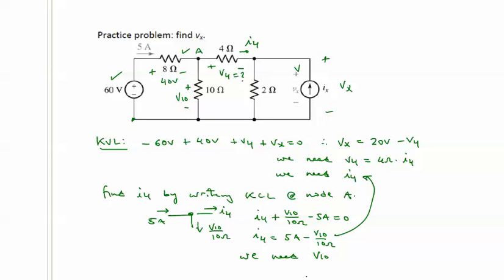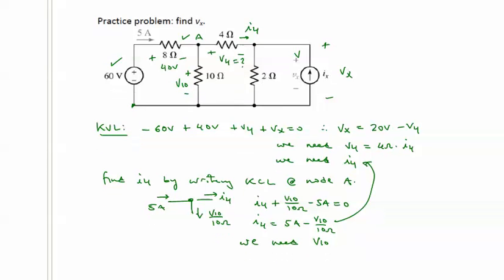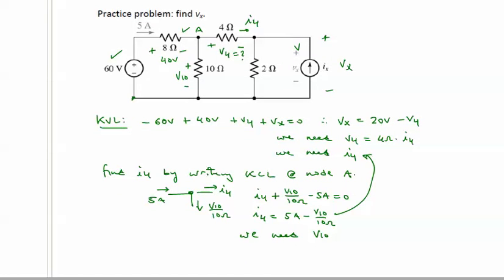We're just chasing after this. We're eventually going to find something that we can determine, and then we'll just back calculate all these values. So we need V10. How can we find V10? Well, V10 is itself part of another KVL loop. And it turns out, we know those two voltages.